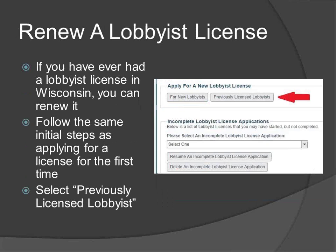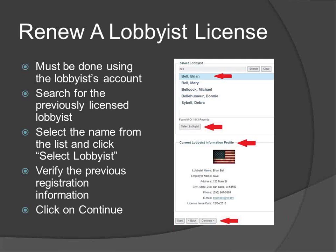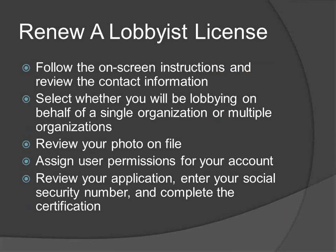If you have ever had a lobbyist license in Wisconsin, you can renew it. Follow the same initial steps as applying for a license for the first time. Log in to the ION Lobbying website, select Registration and Licensing from the left-hand menu, select Apply for a Lobbyist License, and then select Previously Licensed Lobbyist. You must be logged in using the lobbyist's account to renew their license. Use the search box to find your previous license information by searching for your last name. Click on the appropriate name from the list, then click on Select Lobbyist. The most current profile information will display on screen. Review this information to confirm that this is the license you wish to renew. You will be able to edit information if necessary in the following steps. Click on the Continue button to proceed. The rest of the process to renew a license is the same as applying for a lobbyist license for the first time.